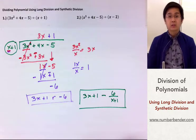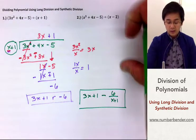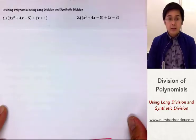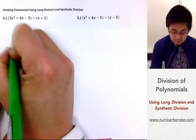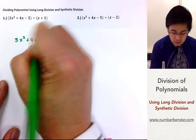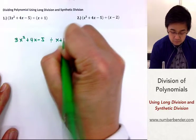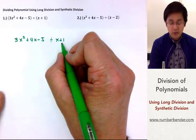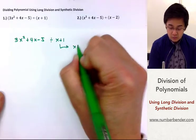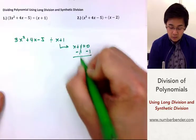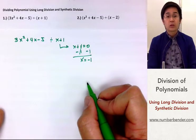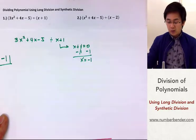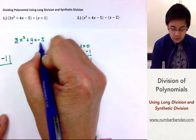Now, how are we going to use synthetic division in dividing the same polynomial from problem number 1? The first thing we're going to do is write out the coefficients of our polynomial. So, I have 3x squared plus 4x minus 5, divided by x plus 1. In synthetic division, we're going to use the zero of x plus 1 — so we solve for x, giving us x equals negative 1. This is what we're going to use as the divisor. So we have negative 1, and then we write out all our coefficients: 3, 4, and negative 5.